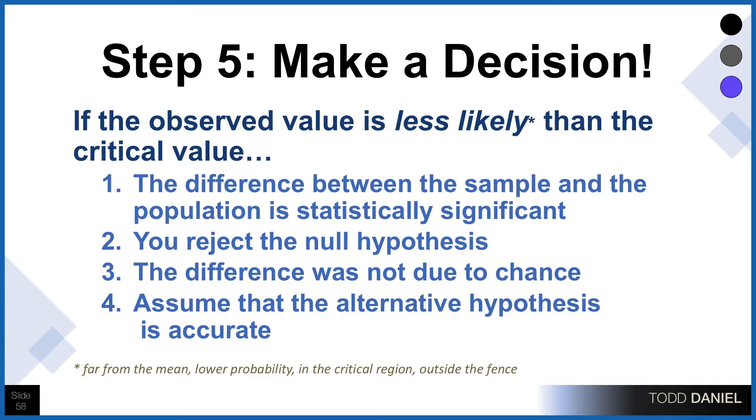We assume that the alternative hypothesis is the accurate hypothesis that explains our findings. When we reject the null hypothesis, we're rejecting a hypothesis that says there is no difference between the sample and the population. So if we reject the idea that there's no difference, we're concluding that in fact there is a difference — and our alternative hypothesis is the best explanation.